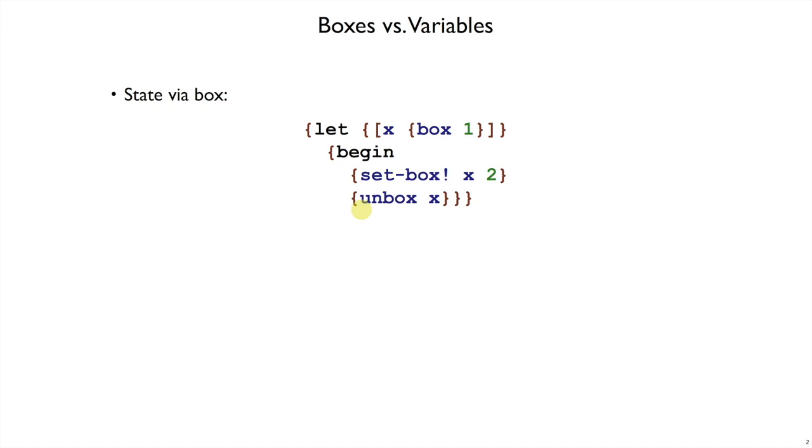But we started out when we were looking at plate, looking at a different kind of state, which is via variables. Instead of creating a box, binding x to a box that holds one, we can have in plate, we could create an x that is mutable, so that x itself can be changed. And if we just use x, then we'll get the updated value of x. We'll get the two out instead of the one here.